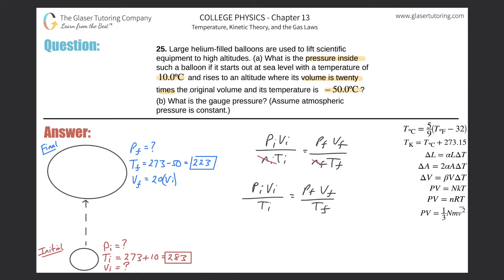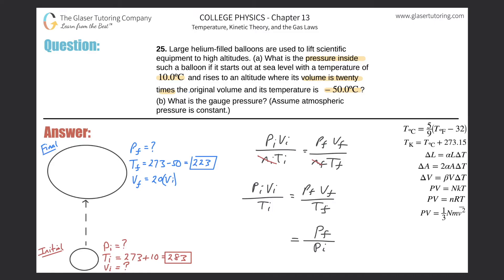However, we're not given an initial pressure, so technically the problem isn't fully solvable for an absolute value. Instead, I'm going to calculate the ratio of the final pressure relative to the initial pressure, Pf/Pi. Rearranging the combined gas law: bring Pi to the denominator on the right, bring Tf to the numerator on the left, and Vf to the denominator on the left — and there is the formula for Pf/Pi.